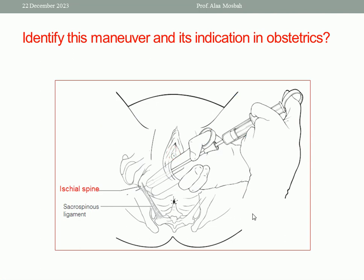The indication of pudendal block is to induce pudendal nerve anesthesia in Obstetrics, especially when you are going to do instrumental delivery like vacuum delivery or forceps delivery. You can also combine the pudendal block with local infiltration anesthesia. So the answer is: pudendal block is used especially if you are planning for an instrumental delivery like forceps or vacuum delivery.